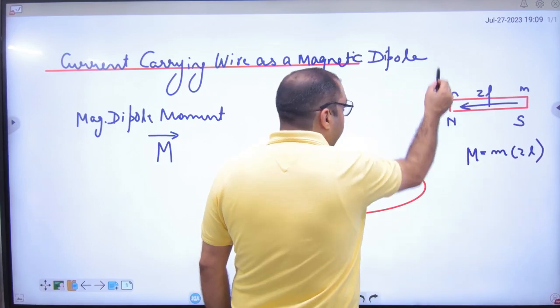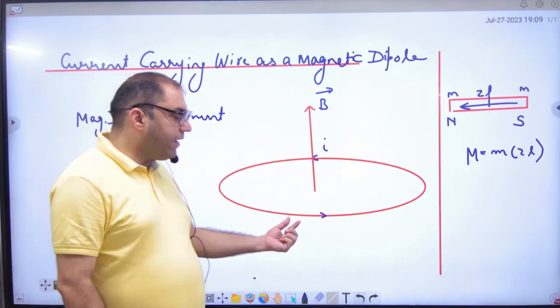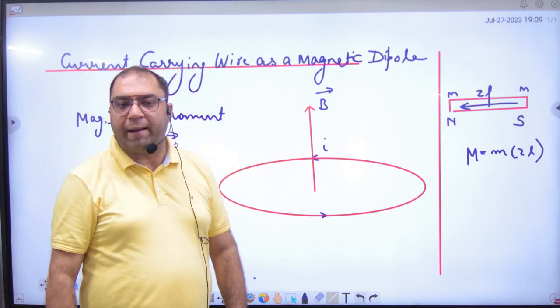The problem was that we were given pole strength. If I take one pole south and north, I don't know the pole strength, so I will not get the capital M.